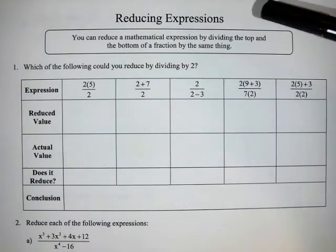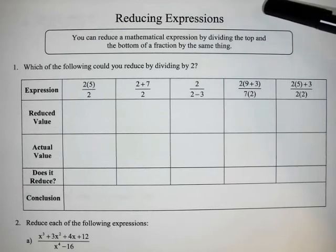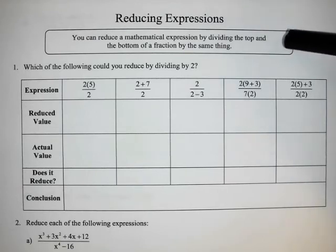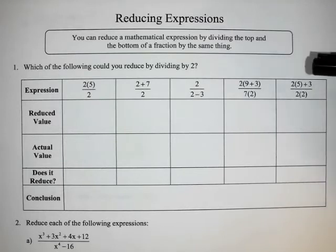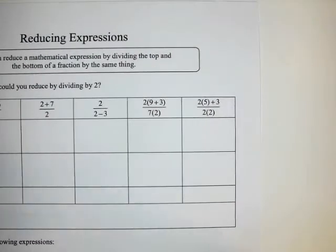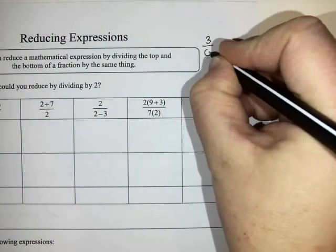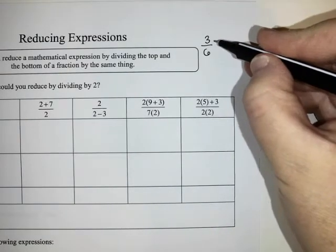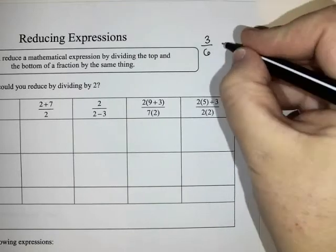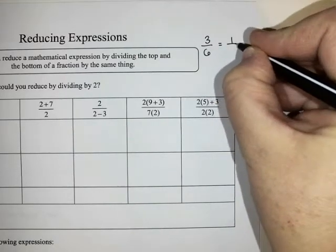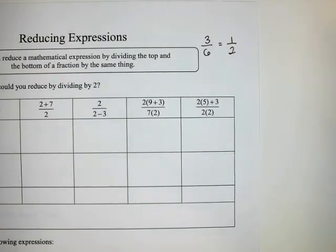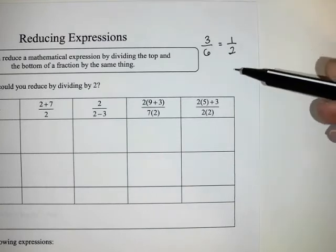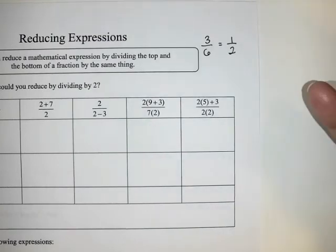This is part one of our video on reducing expressions. You can reduce a mathematical expression by dividing the top and bottom of a fraction by the same thing. As a quick example, if you had the fraction three over six, you can reduce it by dividing the top and the bottom by three — three divided by three is one, and six divided by three is two. So reducing is basically just dividing the numerator and the denominator by the same thing.